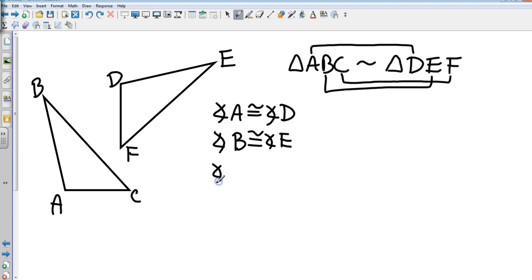And that also means that angle C has to be congruent to angle F. Again, you are given the statement that those two triangles are similar, so those corresponding angles have to be congruent.